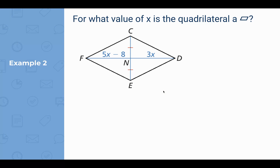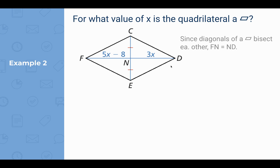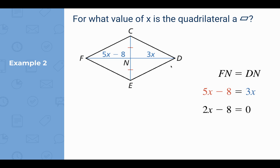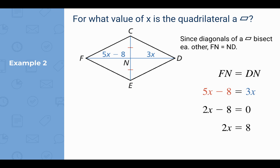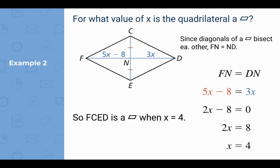Example two: for what value of x is the quadrilateral a parallelogram? We're looking at the diagonals. For this to be a parallelogram, both diagonals would have to bisect each other. One diagonal is already bisected because we have congruent pieces. So for the other diagonal to be bisected, those two values must be equal to each other. Solving, FCED is a parallelogram only when x equals 4. Checking: 3 times 4 is 12, and 5 times 4 is 20, minus 8 is 12. So we have 12 units and 12 units.